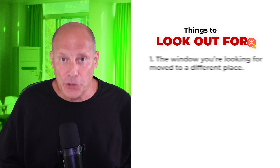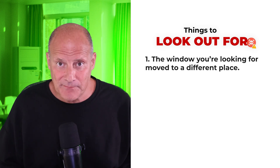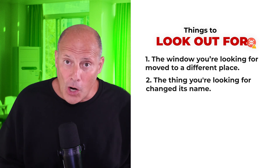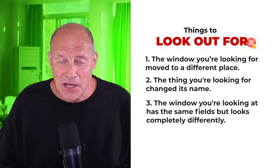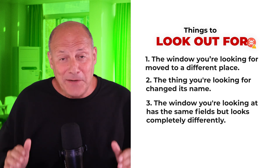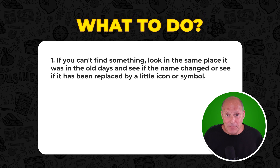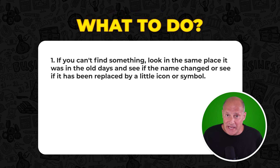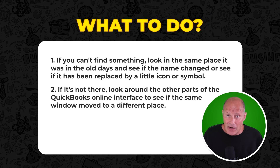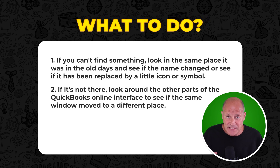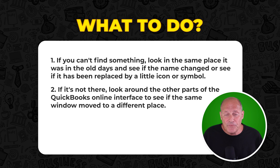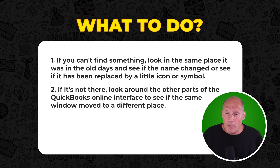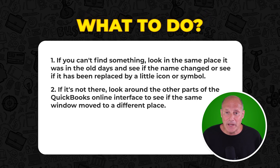In summary, there are three things to look out for: the window you're looking for moved to a different place; the thing you're looking for changed its name; or the window you're looking at has the same fields but looks completely different. Remember what to do: if you can't find something, look in the same place it was before and see if the name changed or if it's been replaced by a little icon or symbol. Then if it's not there, look around the other parts of the QuickBooks Online interface to see if the window moved to a different place.